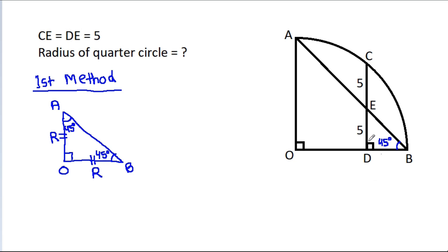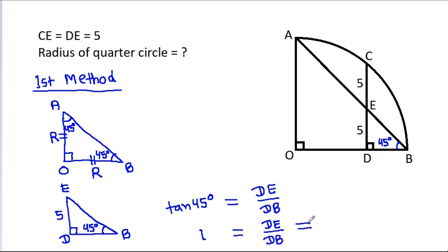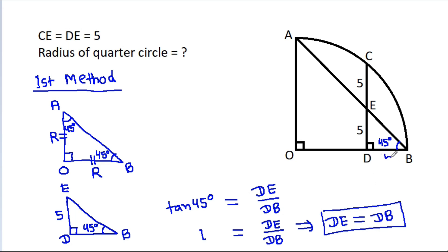Now consider angle EDB. This angle is 90 degrees, DE is 5, and this angle is 45 degrees. So tan 45° equals DE divided by DB. Since tan 45° is 1, DE equals DB. Therefore DB is also 5.